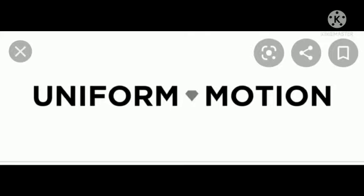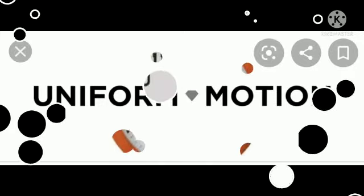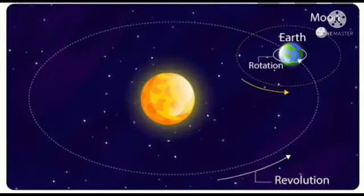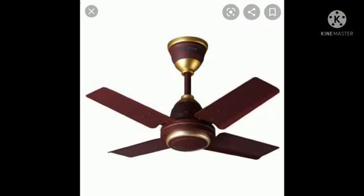Not only the car is an example of uniform motion. Hands of clocks, earth revolving the sun, plates of fan are also some examples of uniform motion.